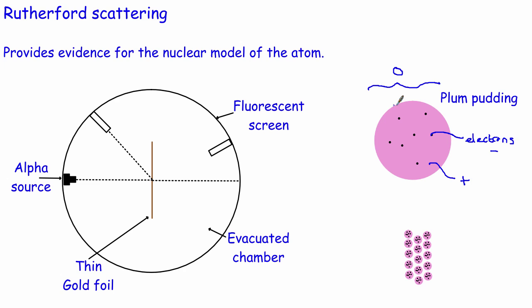Rutherford wanted to know what would happen if you took quite heavy particles and fired them at these atoms. Because the model was fairly diffuse, the alpha particles should come along and he actually thought they'd almost burst through like a watermelon, because alpha particles are really heavy. So they'd kind of pop through and then just continue their journey, and he basically wanted to see what happened if you actually did this to atoms.